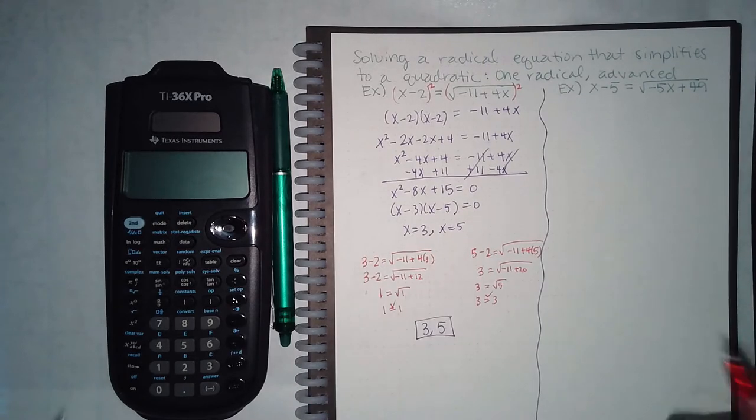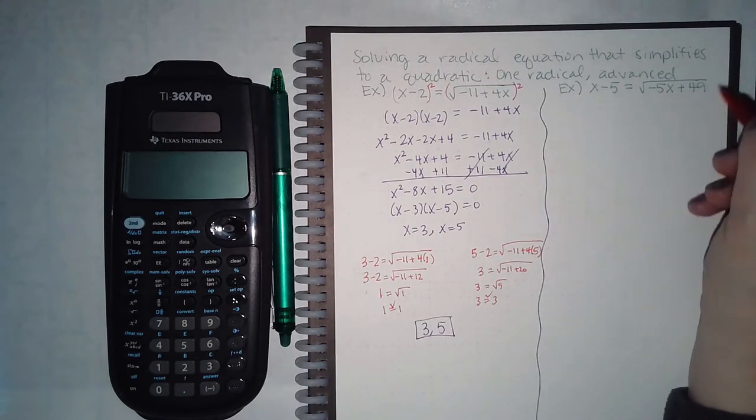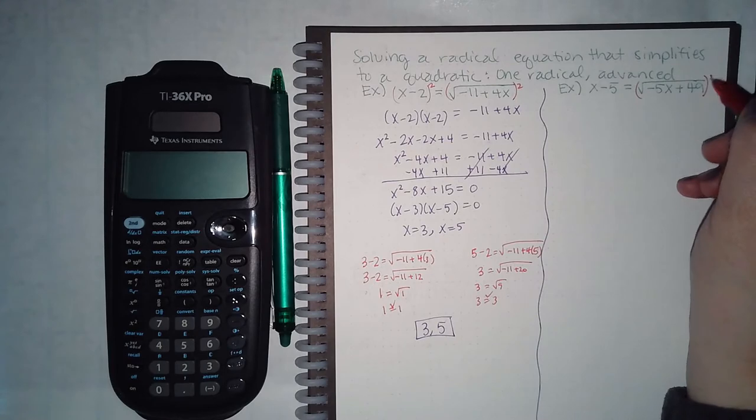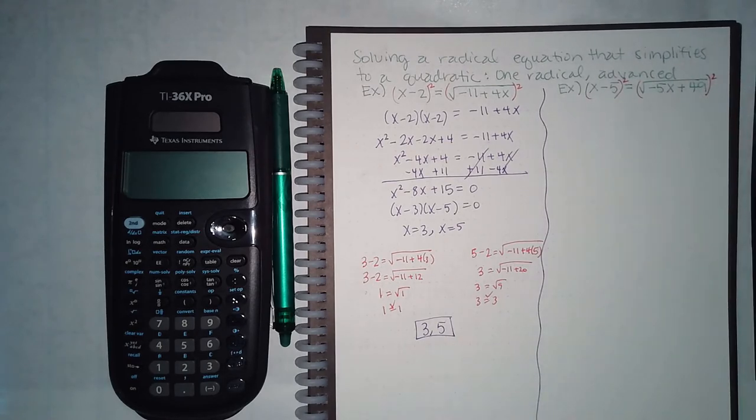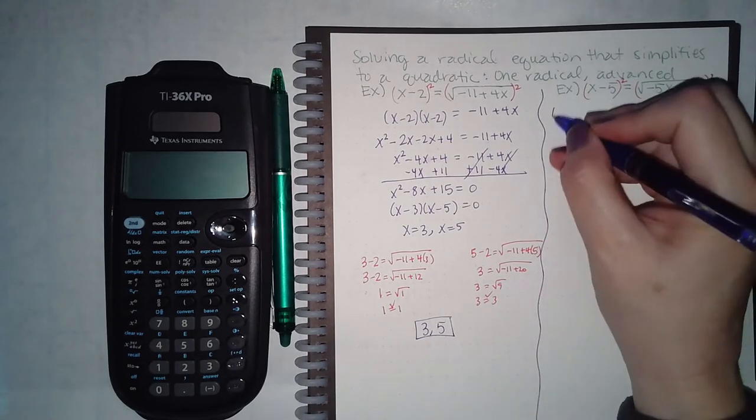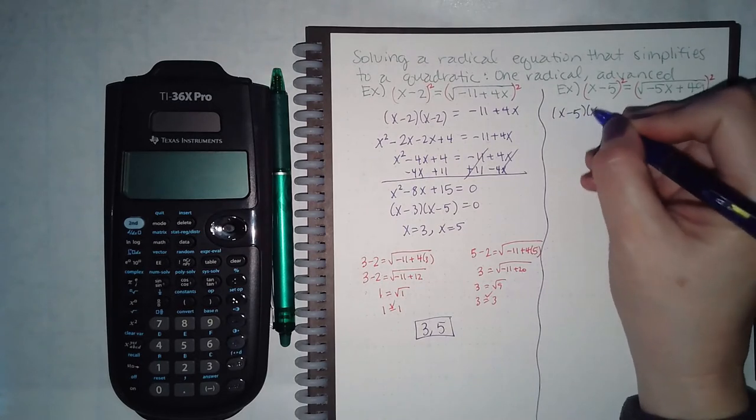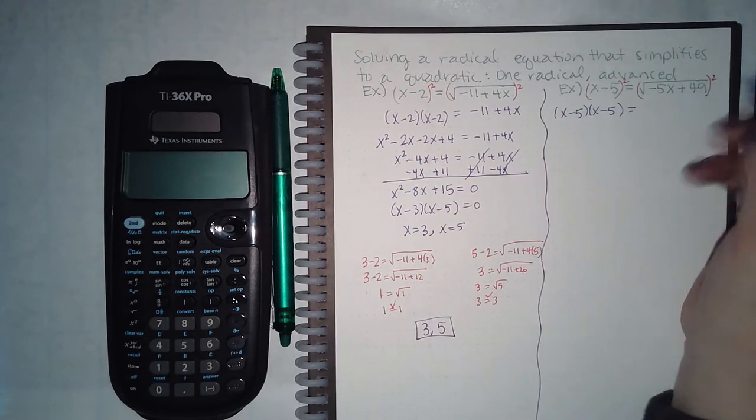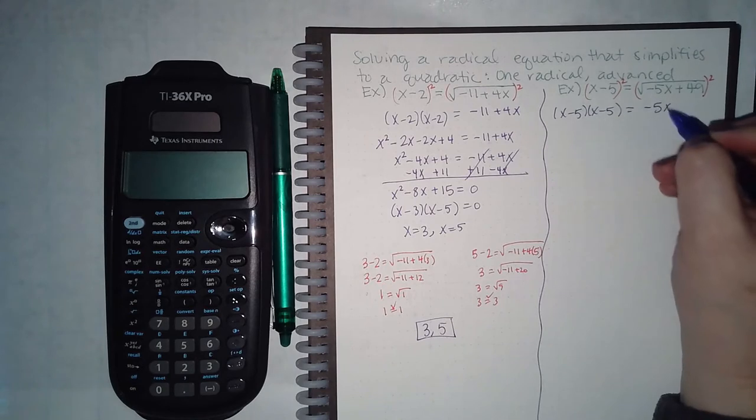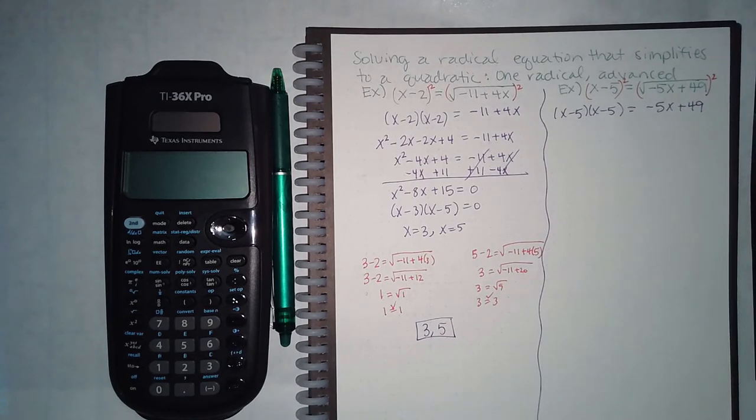Every now let's try the next problem. So the square root is isolated, so I can square both sides, which means I'll have x minus 5 times itself, and over here the radical just cancels. I have the radicand, what was inside, by itself.